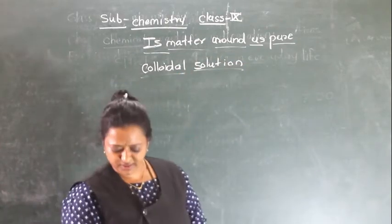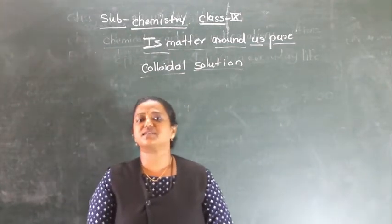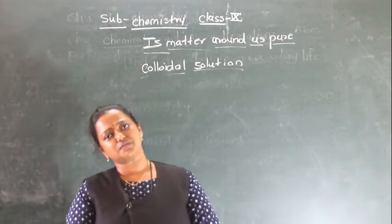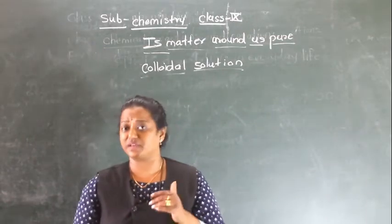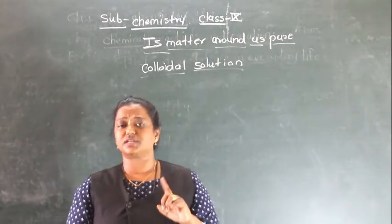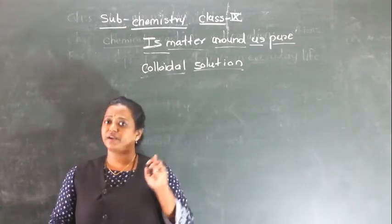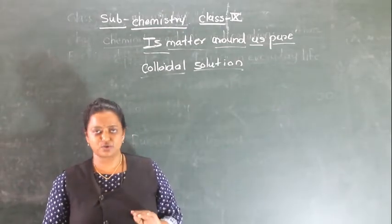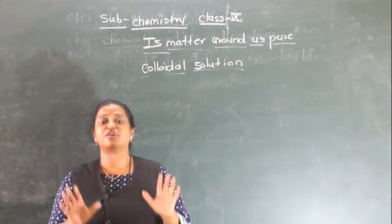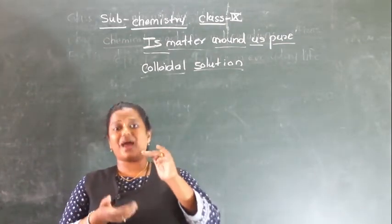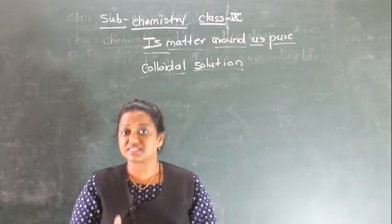So students, colloidal solutions are composed of two components - dispersed phase and dispersion medium. Dispersed phase in the lesser amount and dispersion medium is in a greater amount. In the properties of colloidal solution, you can go back and watch the video once again. And colloidal solutions are always stable components, meaning if you keep it undisturbed for a long time, these dispersed phase particles will never be settled down like a suspension.